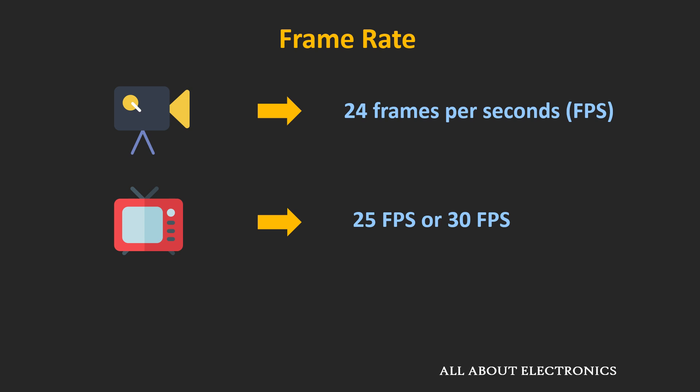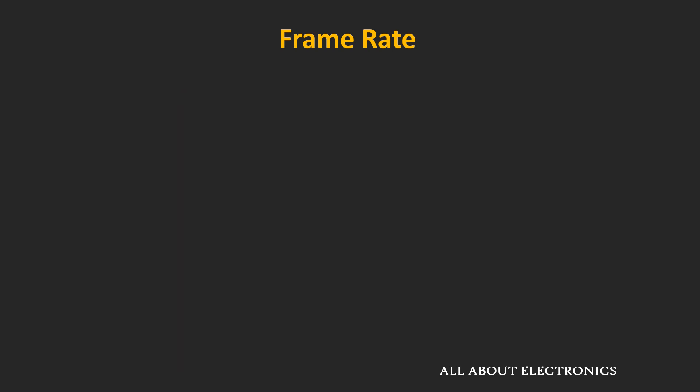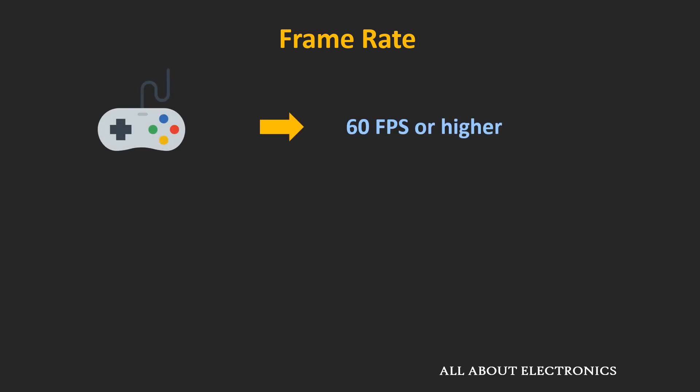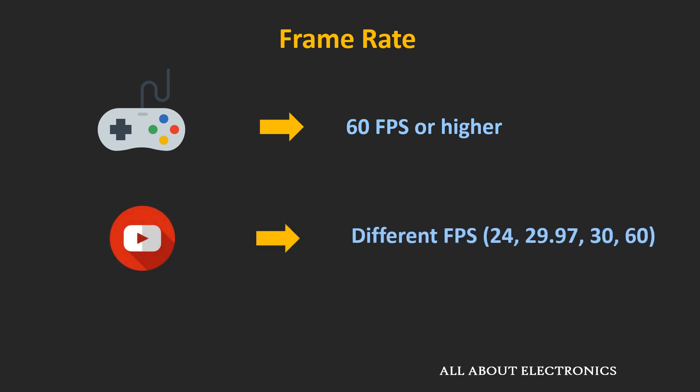Apart from television shows, high-action sports or live broadcasts are transmitted at 60 fps. Games are usually played at 60 or higher frame rates. And content provided by video sharing or streaming services on the internet varies from 20 fps to 60 fps.